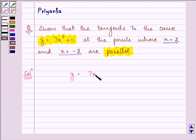We have y = 7x³ + 11. Now differentiating y with respect to x, we get